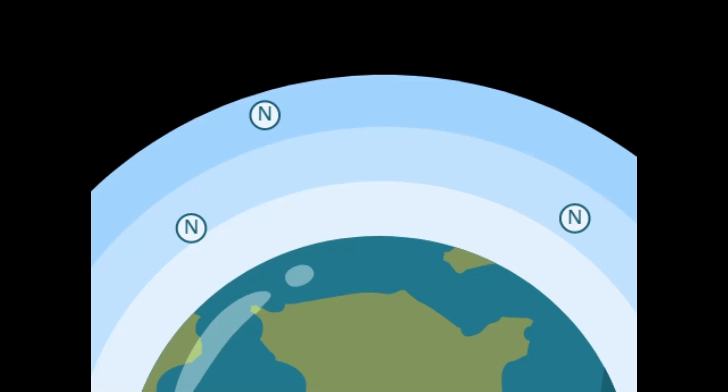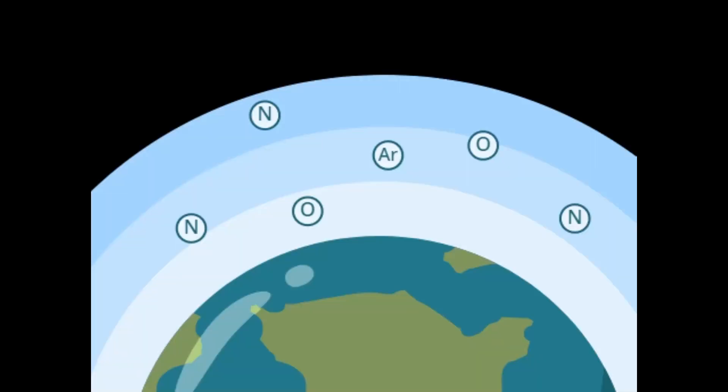Today, Earth's atmosphere is composed of around 78% nitrogen, 21% oxygen, 0.9% argon, and other assorted gases. To find a habitable planet, the best option is one with a similar atmosphere, not only in composition, but in thickness too.